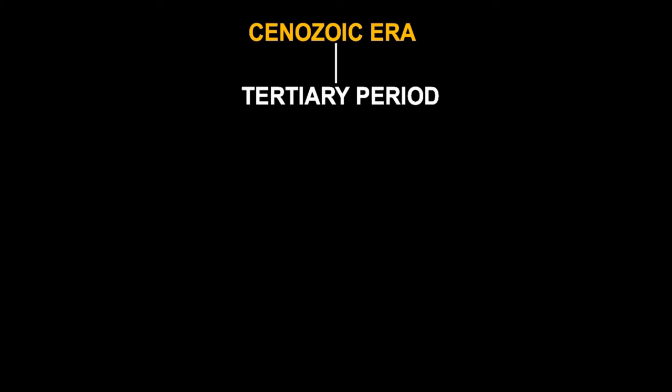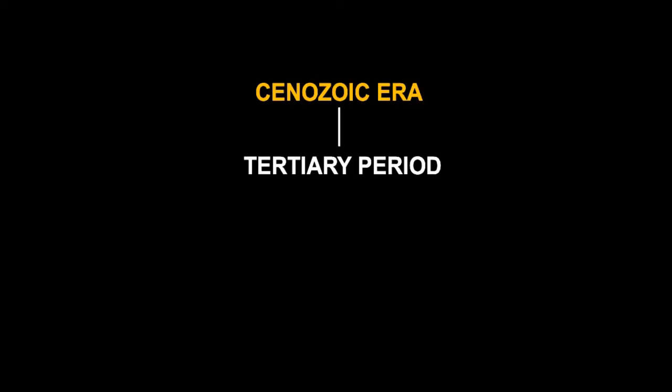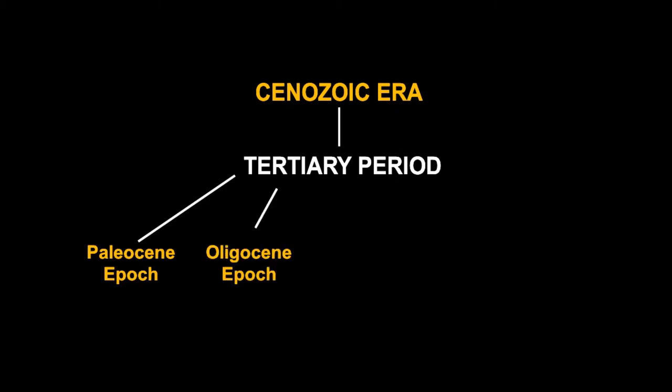Today we'll be studying the Cenozoic Era to understand that period. Even though it had just one period, a British geologist realized that this one period had five epochs — epoch meaning a pause. Because even in that long period of time, different organisms and animals came at different times. He divided it into five epochs: the Paleocene Epoch, the Oligocene Epoch, the Eocene Epoch, the Miocene Epoch, and the Pliocene Epoch.